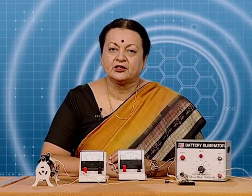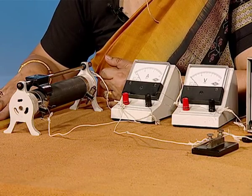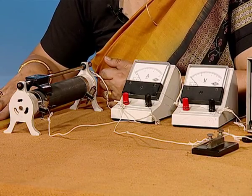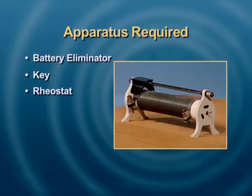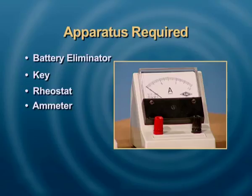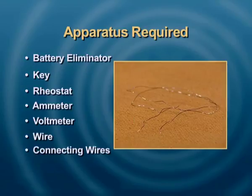We will also try to see if this experiment can help us find the material property of specific resistance of the wire. In order to do that, we require some apparatus: a battery eliminator, a key, a rheostat, an ammeter, a voltmeter, and the wire in question.